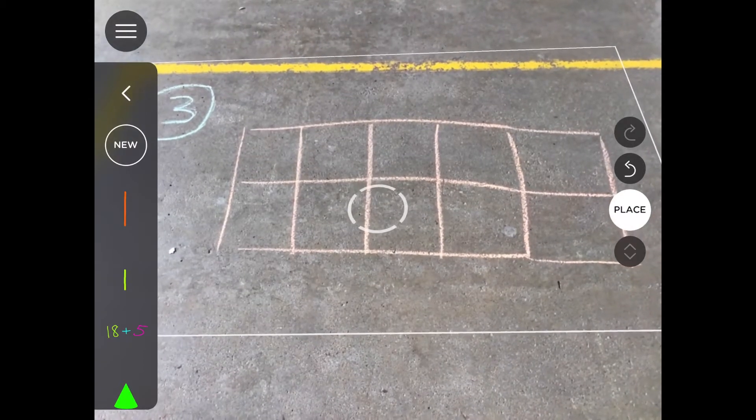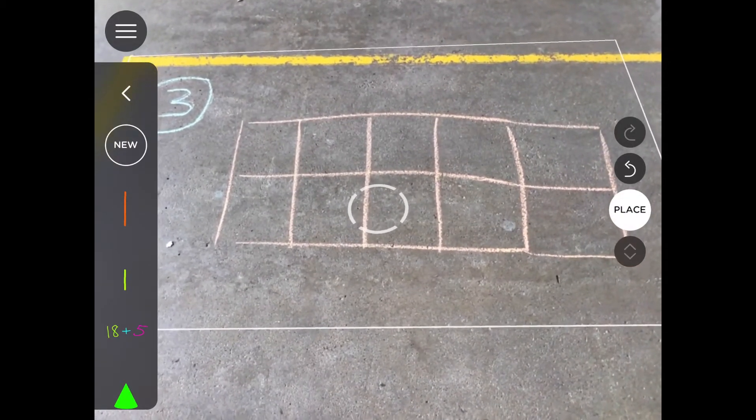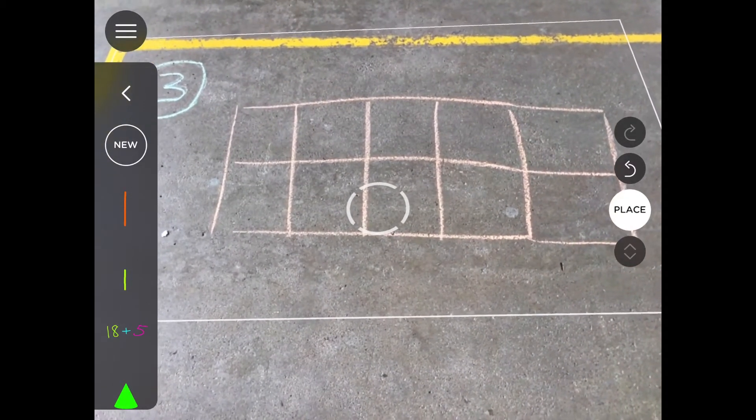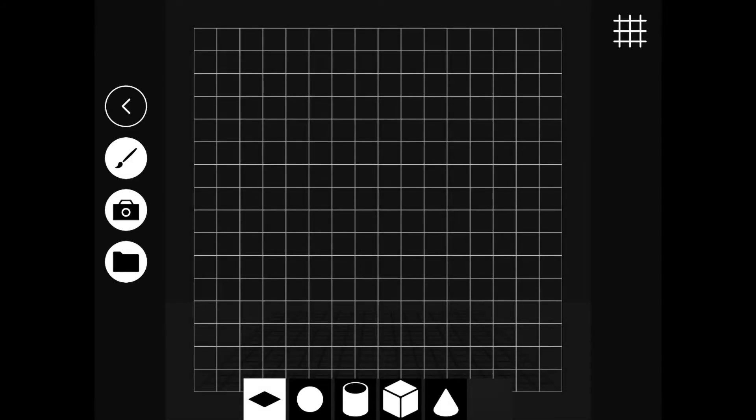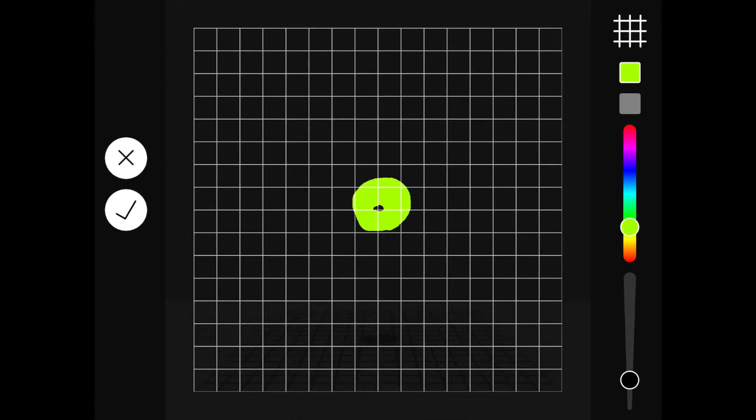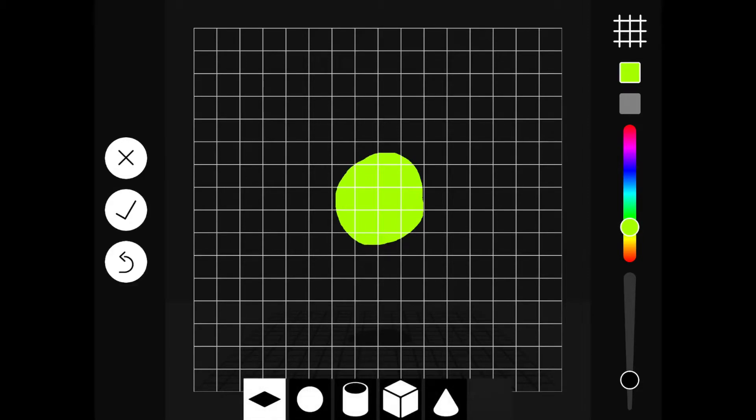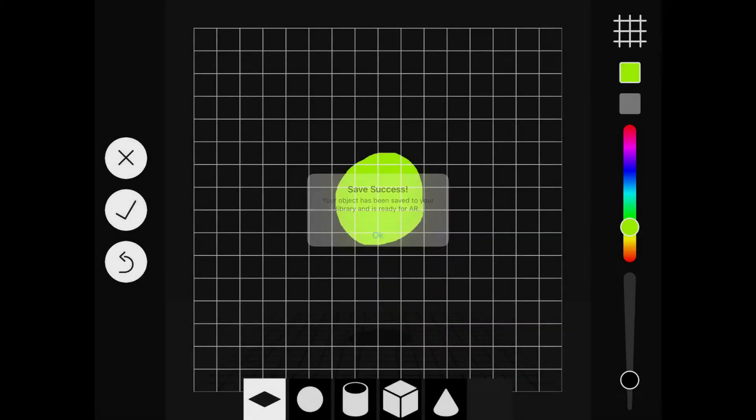This is activity number three, 10 frames in AR Maker maths. So we're going to select new on the top left hand corner, select the paintbrush, choose a color and make a little dot. Select the dot, select the tick, then OK.